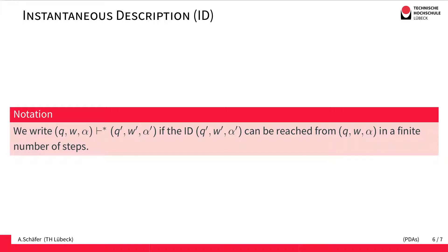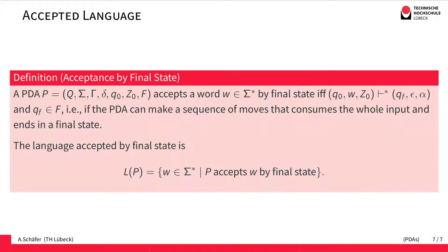Usually we are not only interested in one step but would like to know which IDs are reachable. We use the common star notation to denote that we can reach an ID from another ID if it can be reached in a finite number of steps — which can also be zero. Having this notation, we can formally define the accepted language, and there are two common kinds of acceptance definitions.